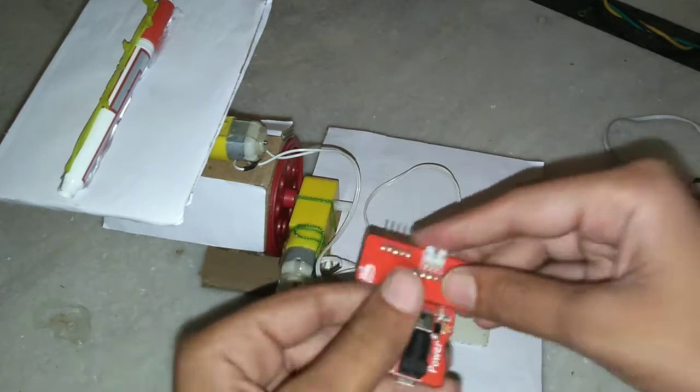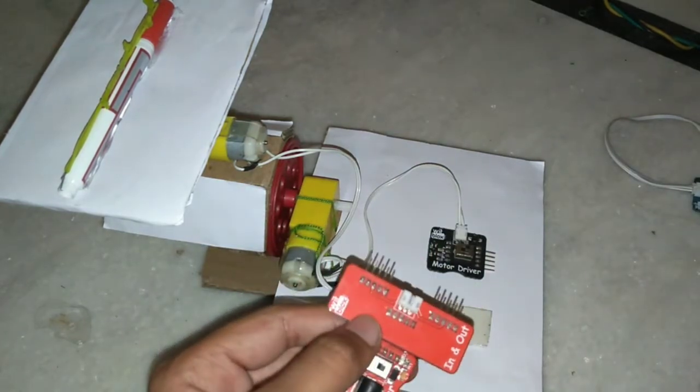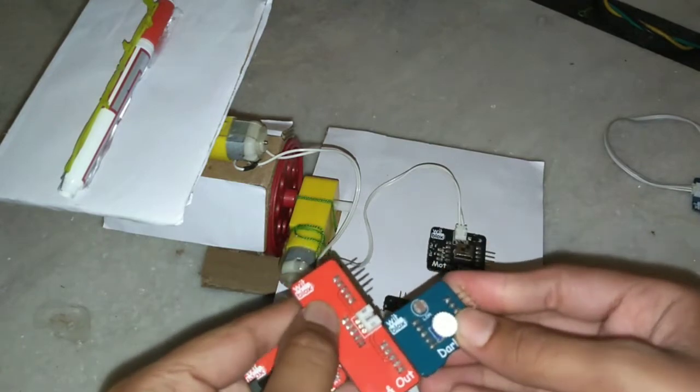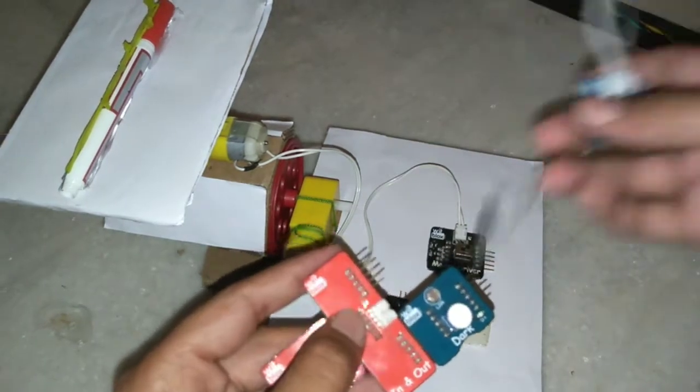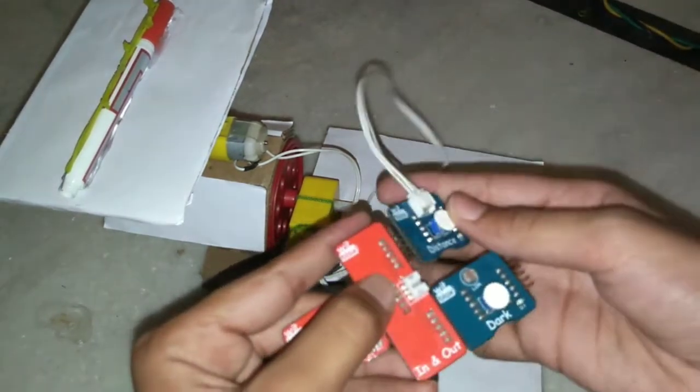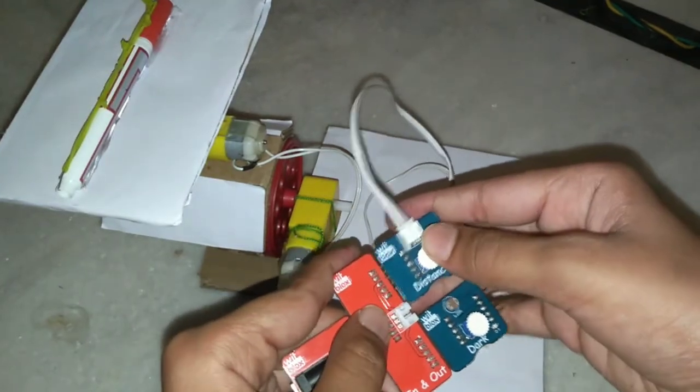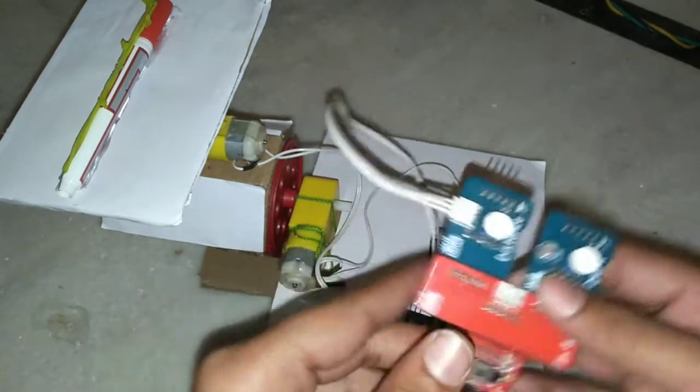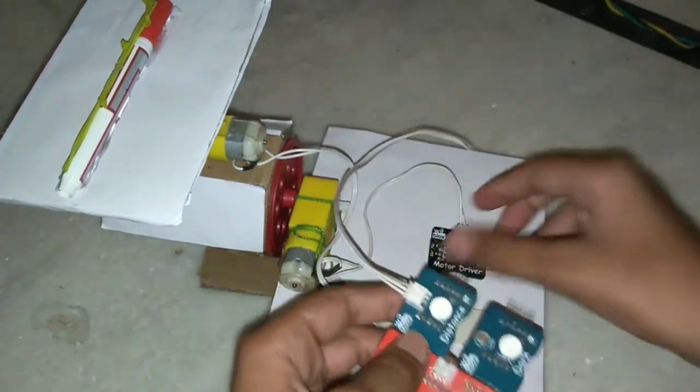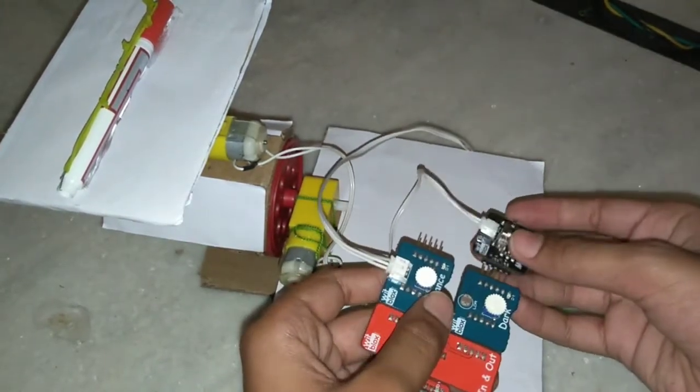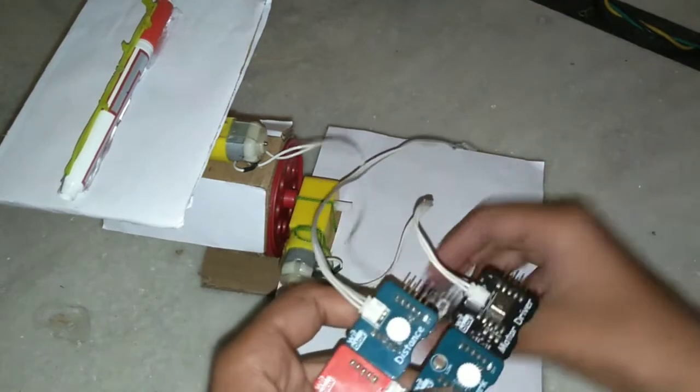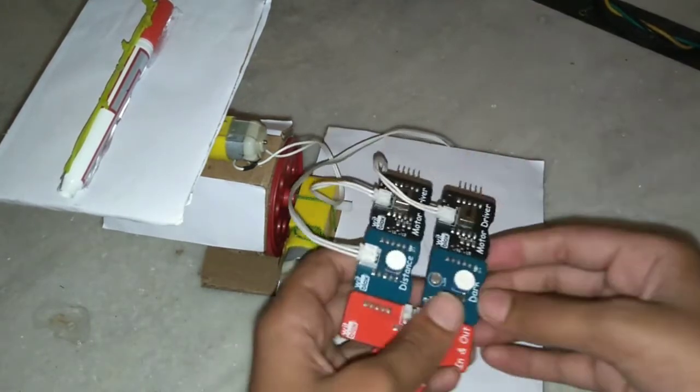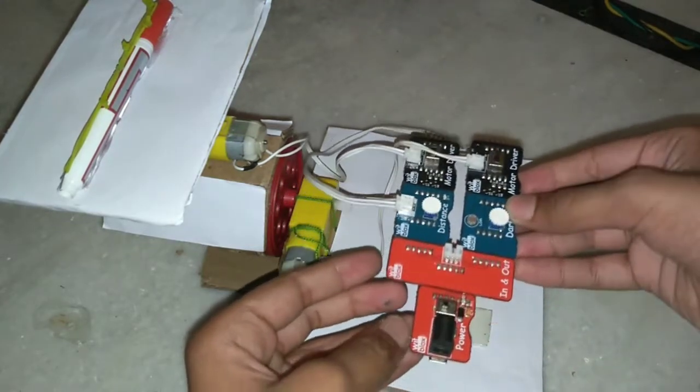Connect these two and connect the dark sensor. And here on the left side connect the distance sensor. Instead of these two you can also use a button module. Now connect these motor modules like this. Here the connection is finished, it's very easy to use.